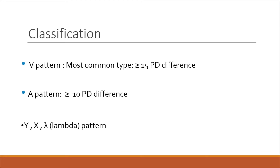How do we classify patterns? We have the V pattern, which is the most common type. We define it when the difference between upward and downward gaze horizontal deviation is greater than 15 prism diopters. We have an A pattern when the difference between upgaze and downgaze horizontal strabismus is 10 prism diopters. Other patterns include lambda, Y, and X pattern strabismus.